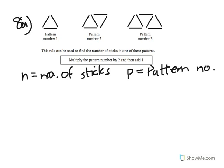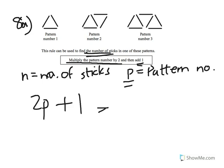Question 8 gives you three patterns of sticks and says the rule to find the number of sticks is: multiply the pattern number by 2 and add 1. In question 8a, n is the number of sticks and p is the pattern number. Write down a formula for n in terms of p: multiply p by 2 to get 2p, then add 1. So n equals 2p plus 1.